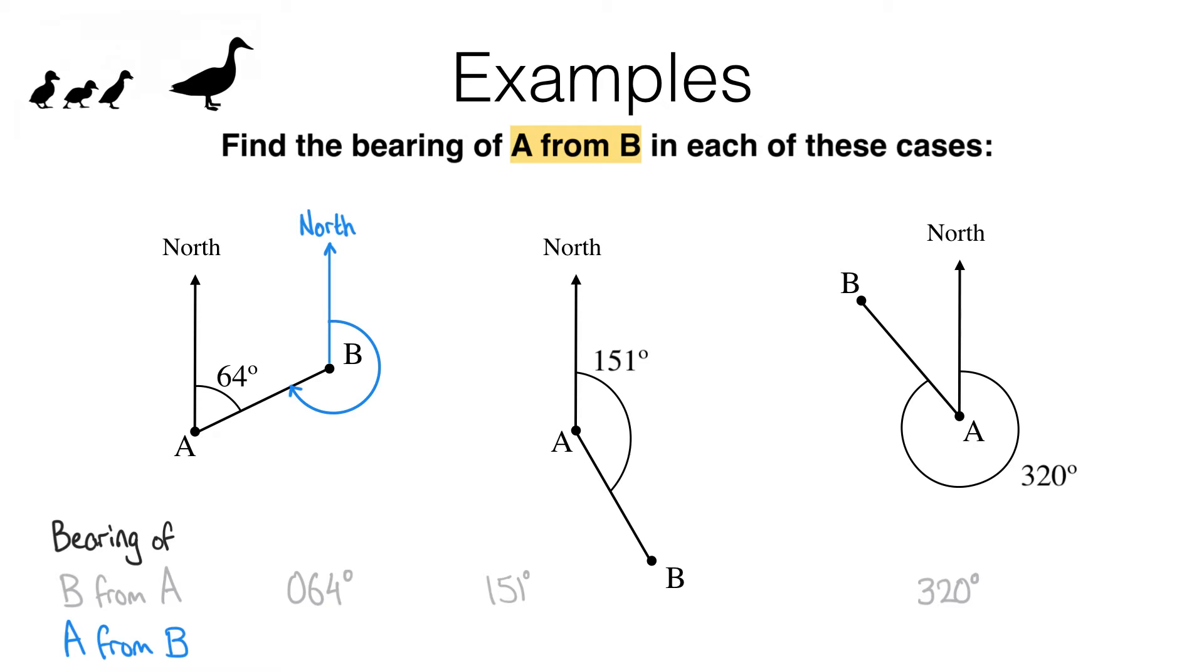Well, we can use our knowledge of alternate angles on parallel lines. If I extend this line towards the south, you'll see we have a pair of alternate angles on parallel lines here and here. So they must be equal.